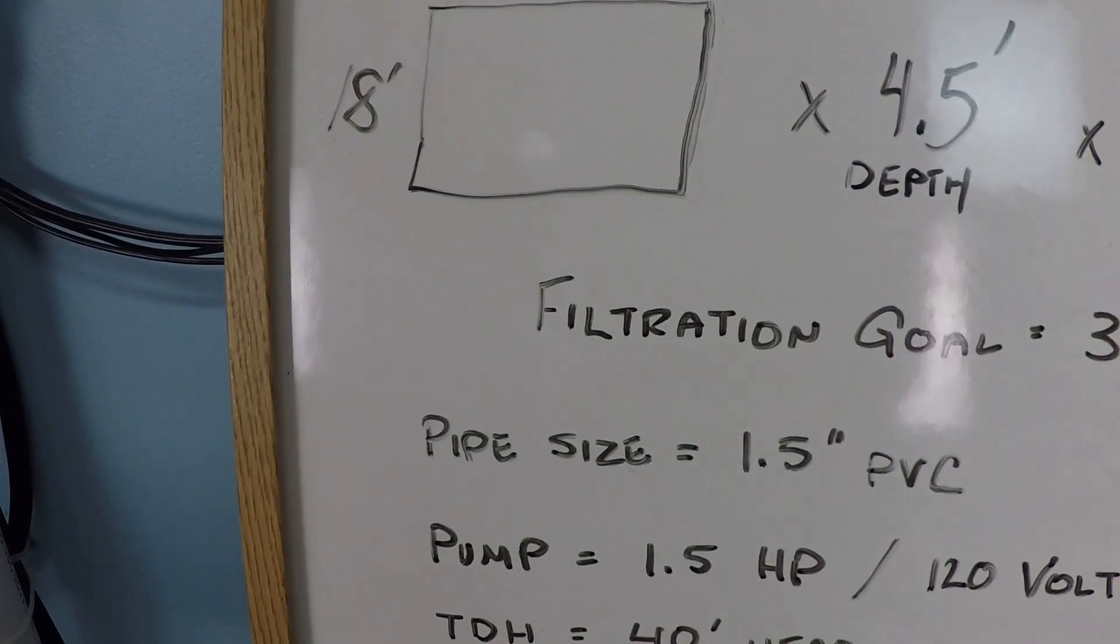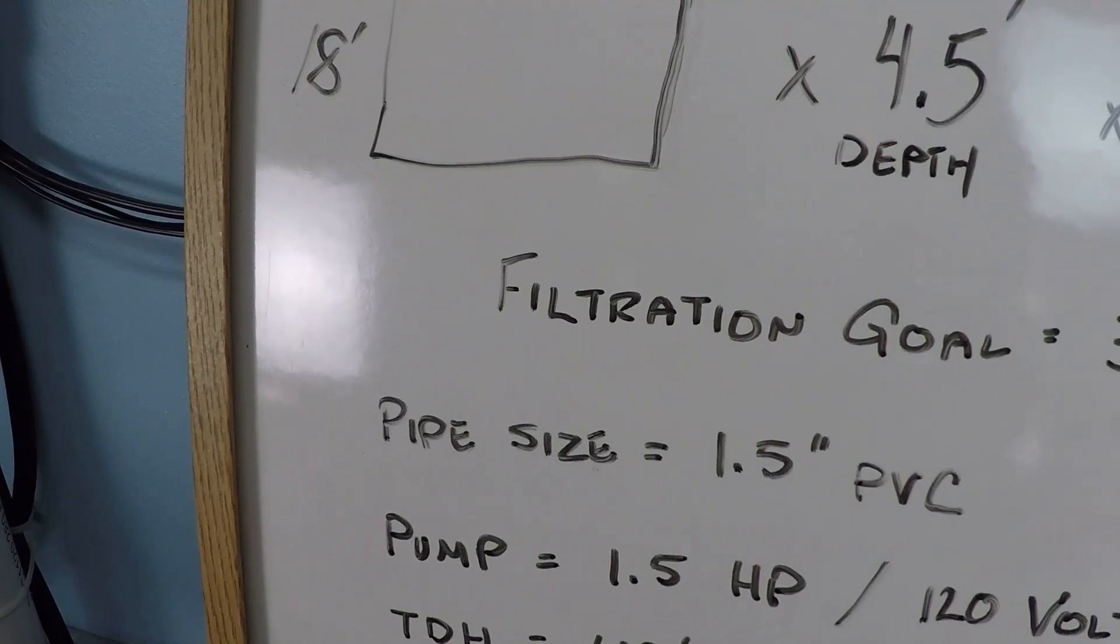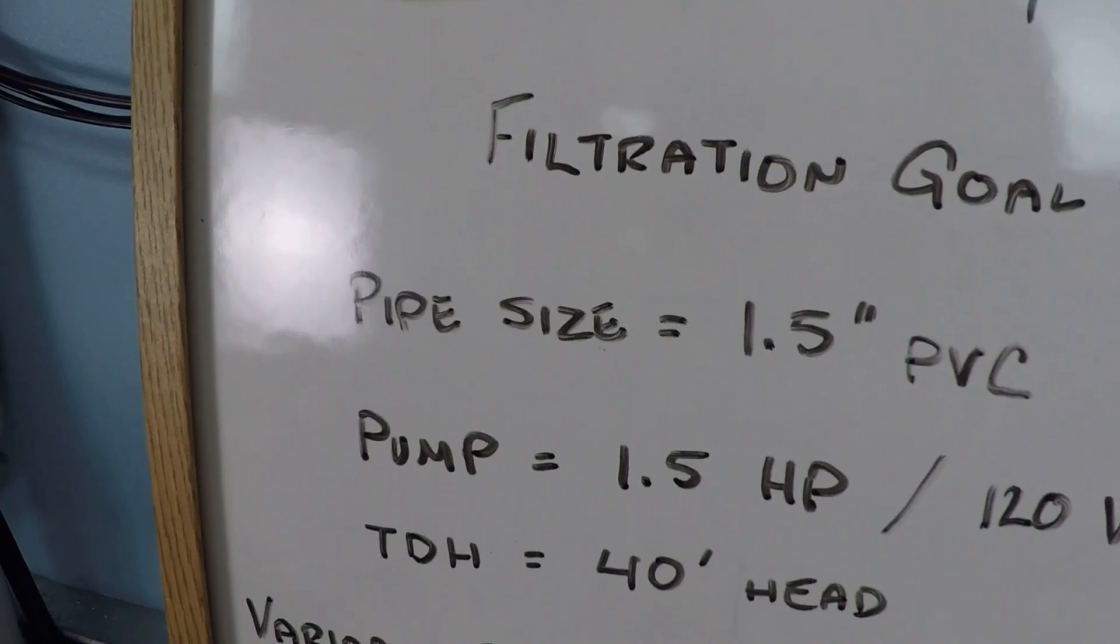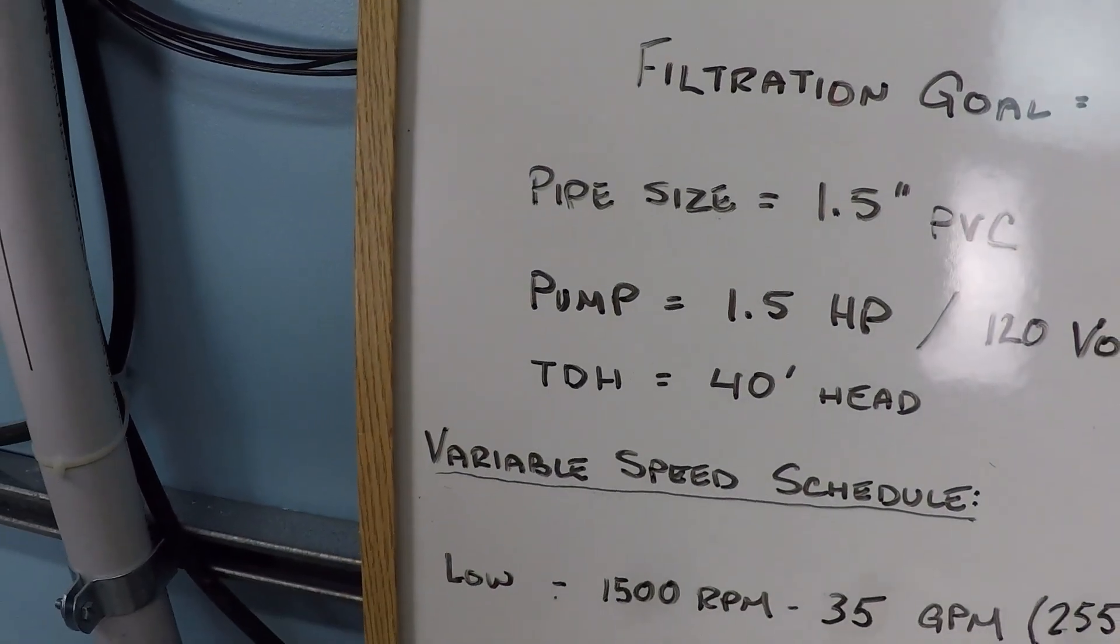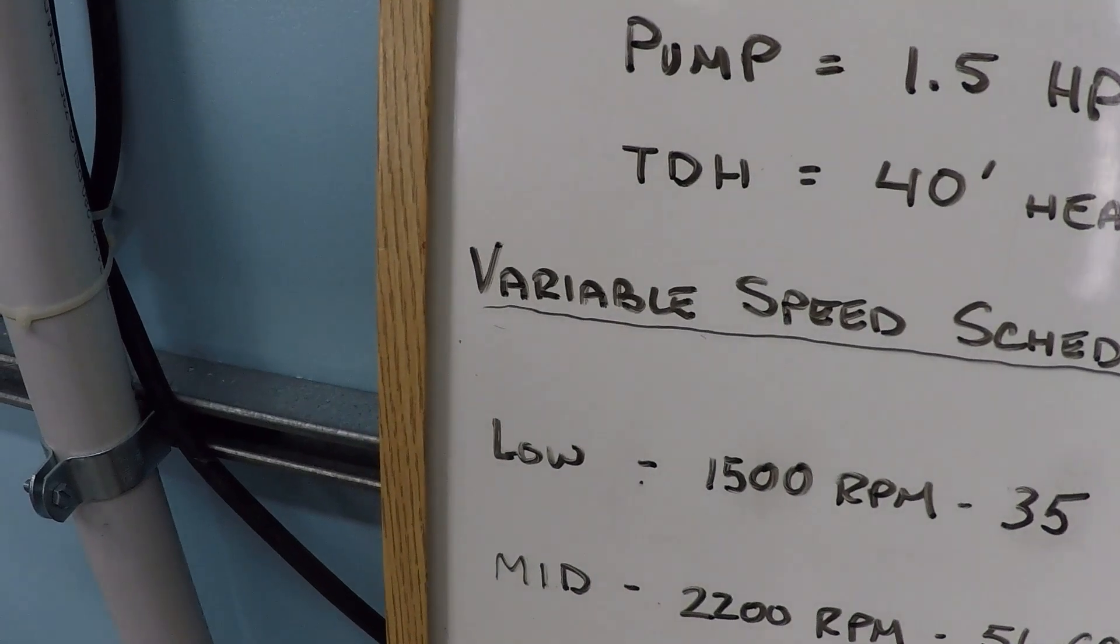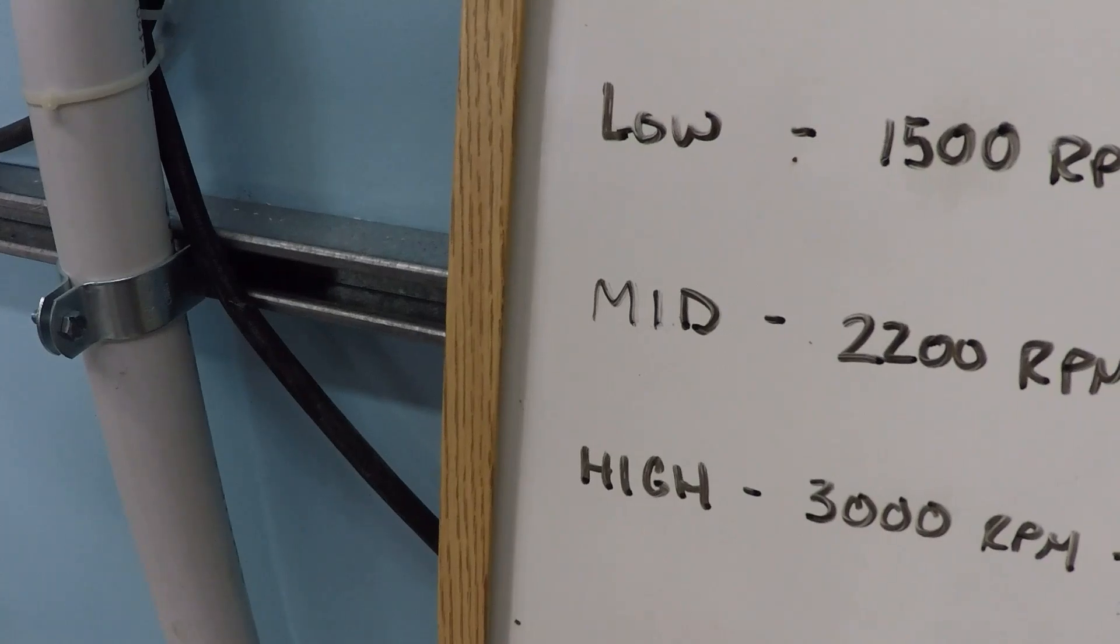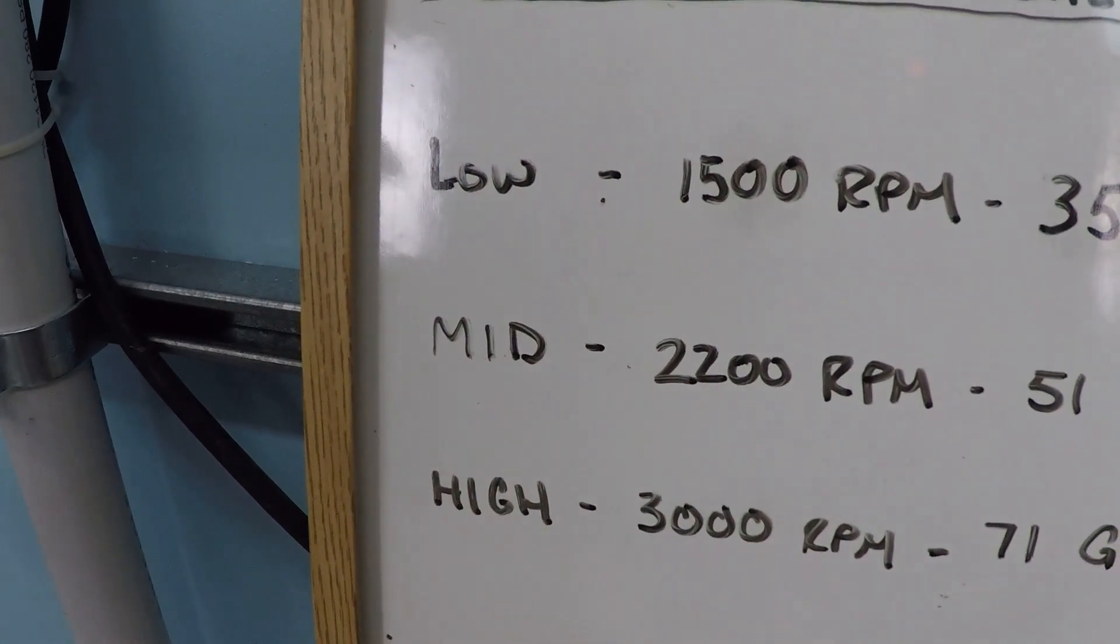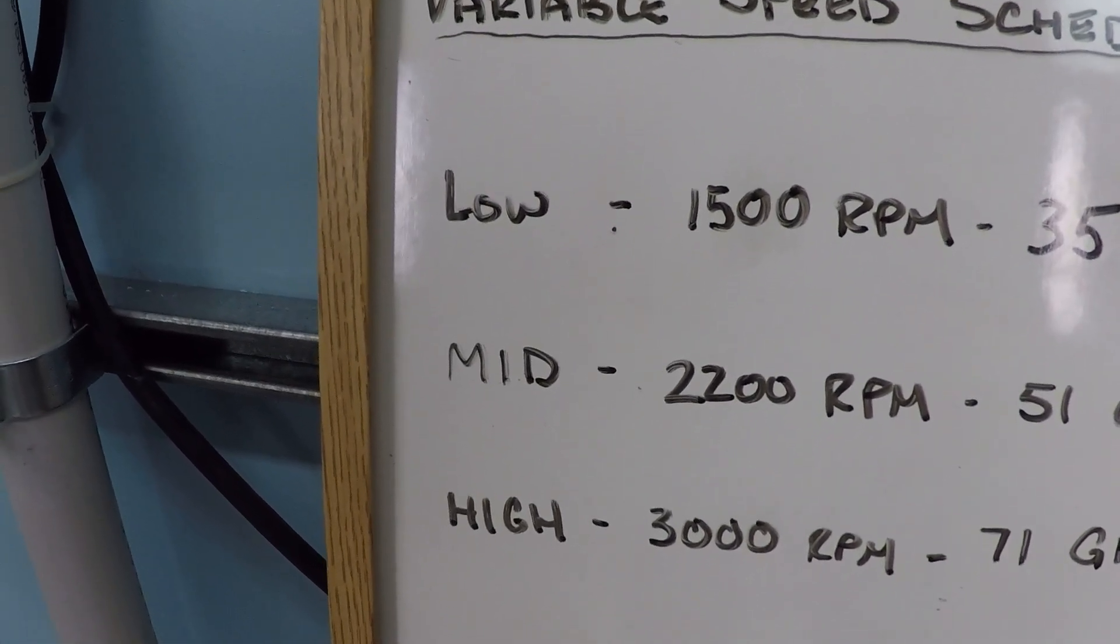This system is based on 1.5 inch PVC, kind of on the smaller side for what is otherwise a fairly large pool. It has a 1.5 horsepower pump and the TDH of this system is 40. Let's look at the variable speed schedule - you need periods of time at low, medium, and high speeds every day.